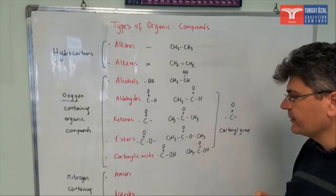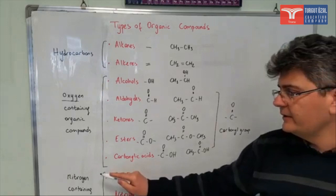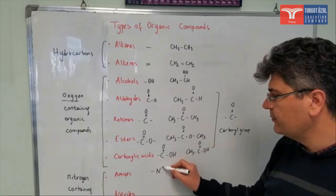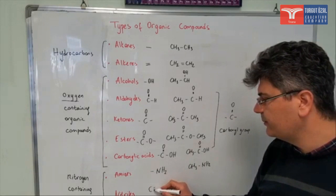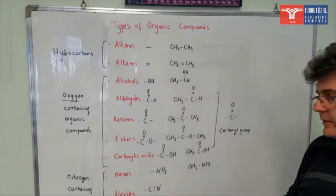The next two are amines and nitriles. These are two examples of nitrogen-containing organic compounds. Amines are the ones which contain an amino group as a functional group, NH2. So here we have methylamine. Nitriles are the ones which contain a carbon atom with a triple bonded nitrogen, and this carbon atom is connected to another radical. So it's going to be methyl nitrile.